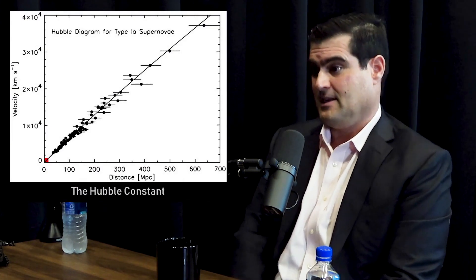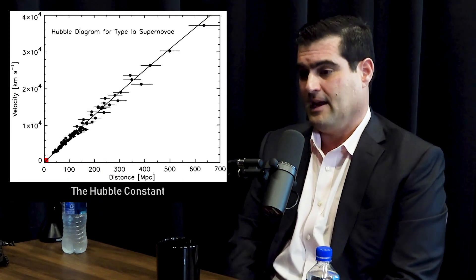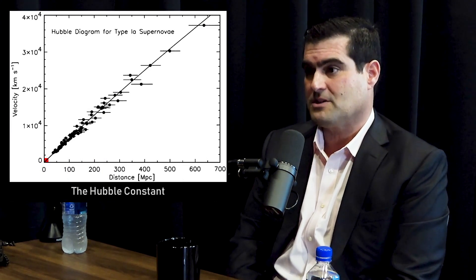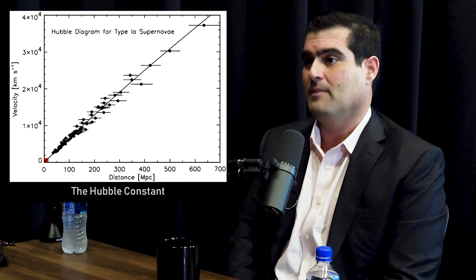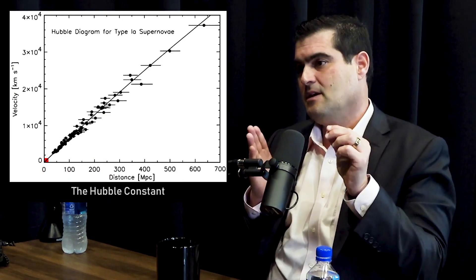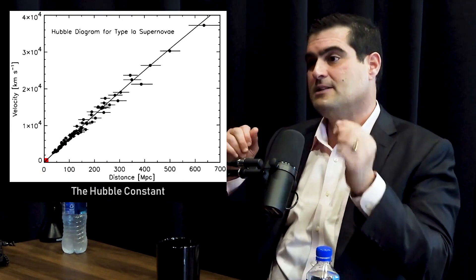Both basically rely on the most important number in cosmology, which is called the Hubble constant. The Hubble constant has the units of kilometers per second per megaparsec — it's a speed per distance. So you multiply it by distance and you get a speed, and you're measuring the speed of a distant galaxy at many megaparsecs away.